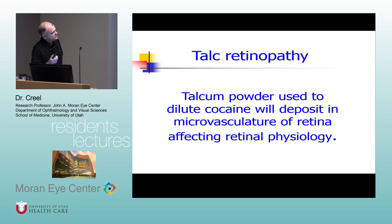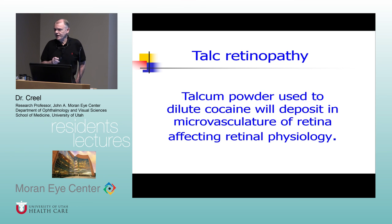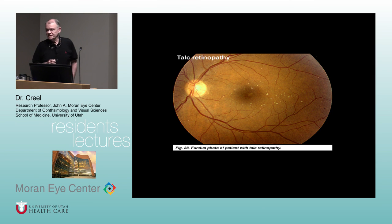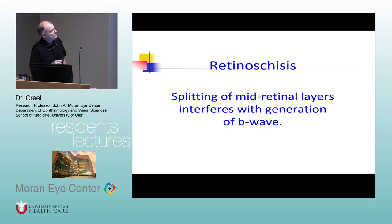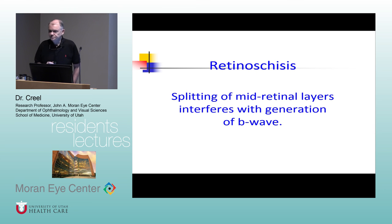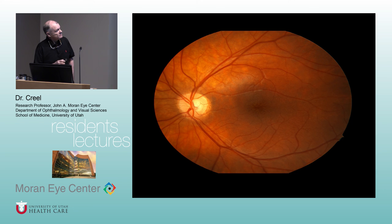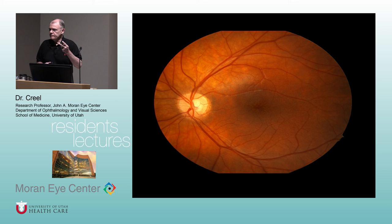Talcum powder, commonly used to cut cocaine, gets clogged in the microvasculature and can be seen in the ERG. Retinoschisis — this can be a board question. There are two disorders that most reflect the sensitivity of the B wave: one is retinoschisis and the other is congenital stationary night blindness (CSNB). Their ERGs look the same, for different chemical reasons.